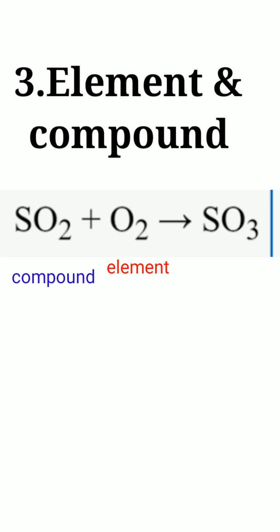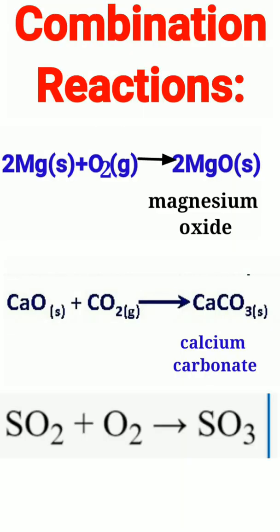Third type of combination reaction is reaction between an element and a compound. Sulfur dioxide is a compound which is formed of two elements, sulfur and oxygen. It combines with oxygen to give a single product of sulfur trioxide. In combination reactions, elements and compounds combine together to give a single product.